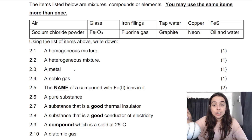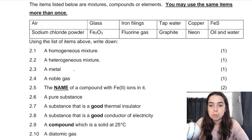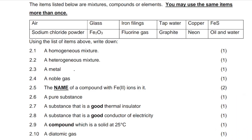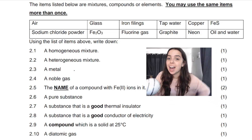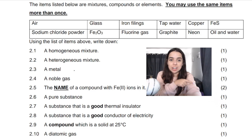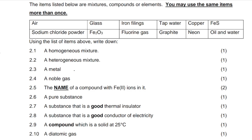Now another list question. I want you to pause the screen so you can see the items listed, try it yourself, and unpause to see how many you get correct — it's out of 10 marks. The items below are mixtures, compounds, or elements, and you may use the same items more than once. For a homogeneous mixture, the first one I see is air. Air is a homogeneous mixture.